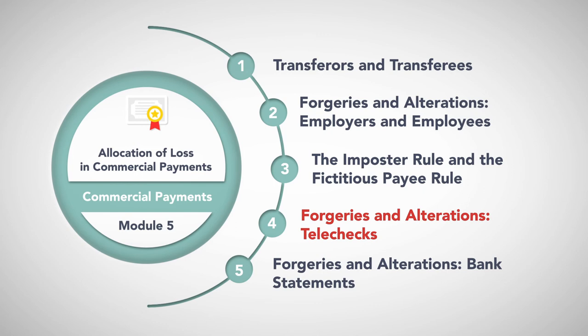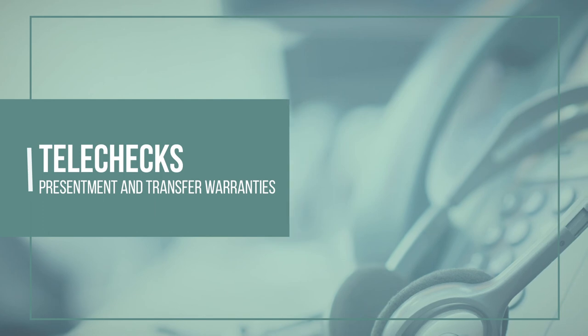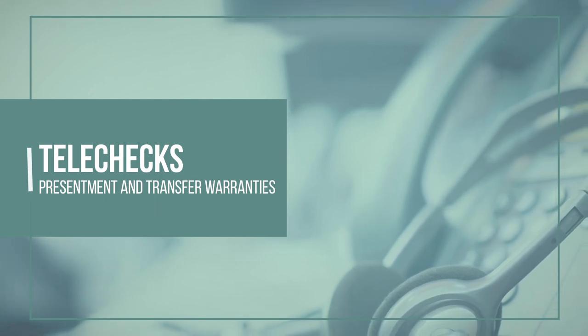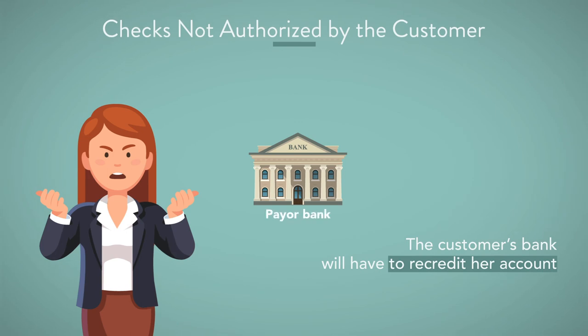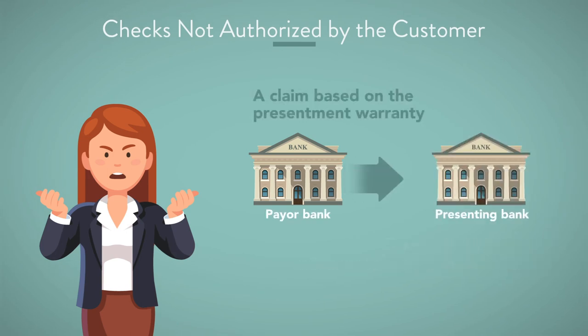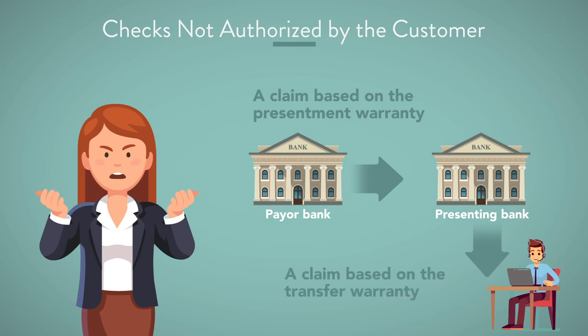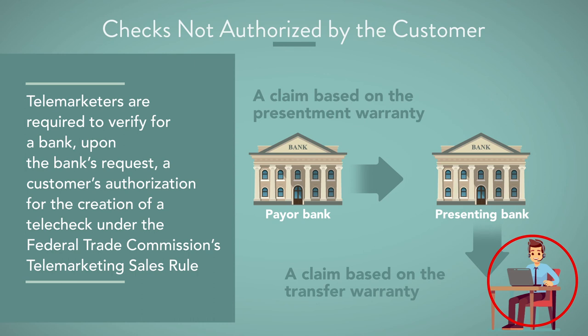Forgeries and Alterations — Telechecks. The presentment and transfer warranties allow banks to pass a loss back to the presenting bank and previous transferors in the case of telechecks. A telecheck is a check created by a telemarketer over the internet or phone on a customer's behalf. Where a telemarketer creates checks not authorized by the customer, the customer's bank will have to recredit her account. The payer bank would have a claim against the presenting bank based on the presentment warranty, and that bank would in turn have a claim against the telemarketer or prior transferors based on the transfer warranty. Telemarketers are required to verify a customer's authorization upon the bank's request under the FTC's telemarketing sales rule.